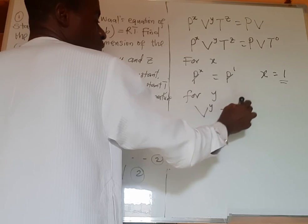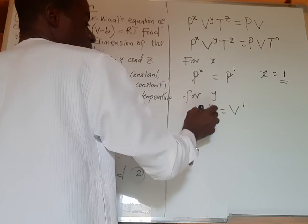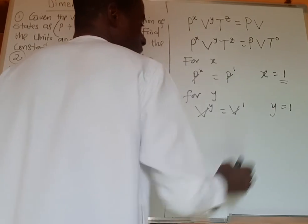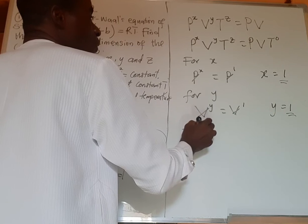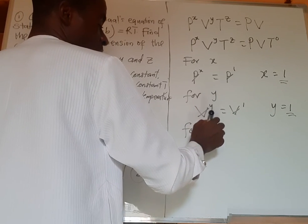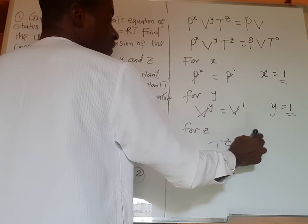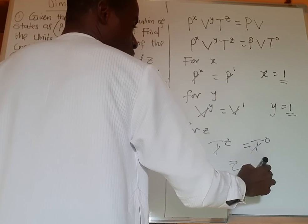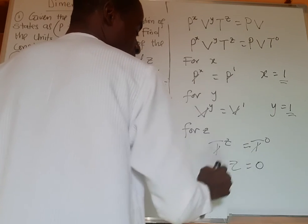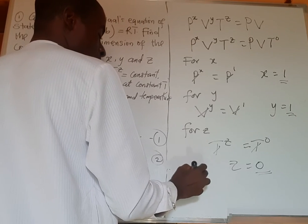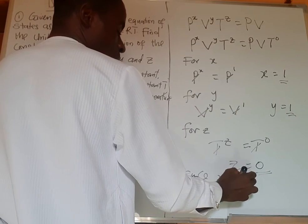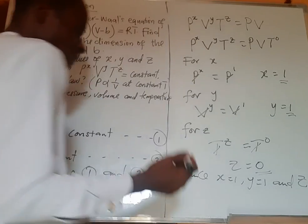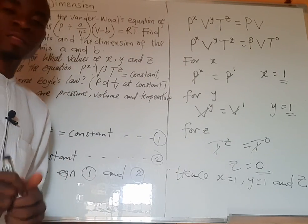For z, T^z equals T⁰, so z equals 0. Therefore, x equals 1, y equals 1, and z equals 0. That's the answer, as simple as that. Thank you for watching.